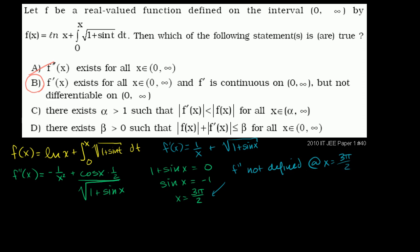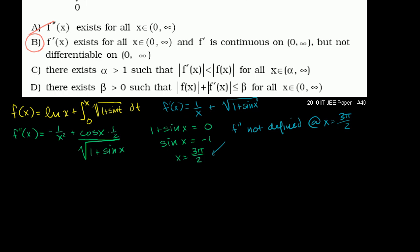Now let's do part C. It says there exists an alpha greater than 1 such that the absolute value of f prime of x is less than the absolute value of f of x for all x essentially greater than alpha. What we want to show is that beyond some threshold, the derivative is always going to be smaller than the original f of x. Let's compare the comparable parts — first, let's compare natural log of x to 1 over x.